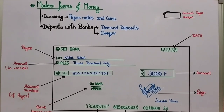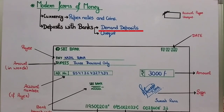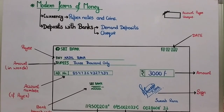Now our topic is deposits with banks, specifically Demand Deposits. Demand means requirements, and deposits means what we deposit in our bank account. The money we deposit in our bank account can be withdrawn whenever we require it. So if I deposit some money in my bank account and need that same amount later, I can go to the bank and withdraw it. Deposits in a bank account which can be withdrawn on demand are called Demand Deposits.